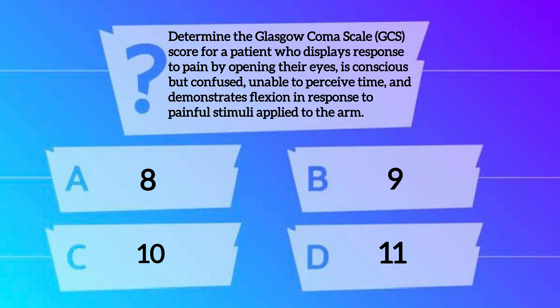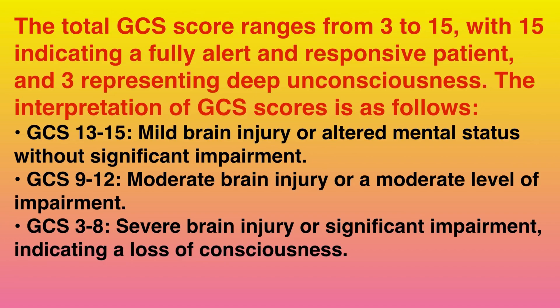The last MCQ for today: Determine the GCS score for a patient who opens their eyes in response to pain, is conscious but confused and unable to perceive time, and demonstrates flexion in response to painful stimuli applied to the arm. Option A: 8. Option B: 9. Option C: 10. Option D: 11. The correct option is Option C — 10. The total GCS score ranges from 3 to 15, with 15 indicating a fully alert and responsive patient and 3 representing deep unconsciousness.